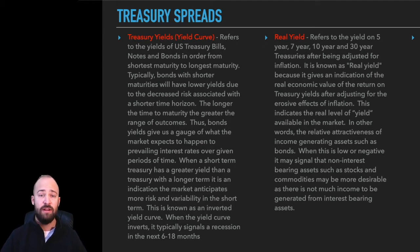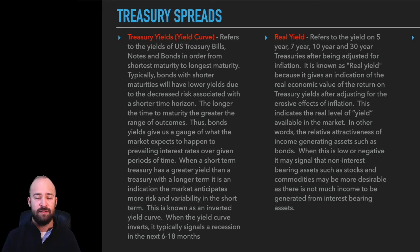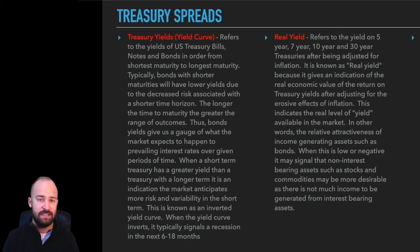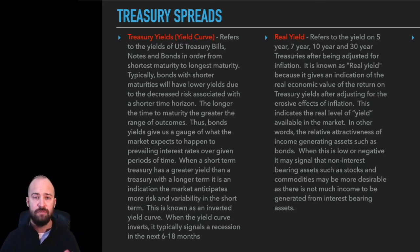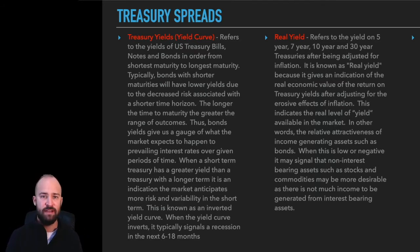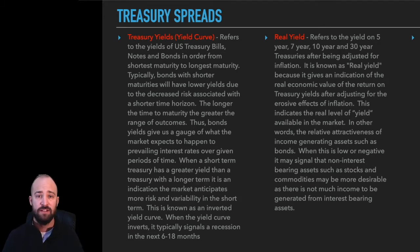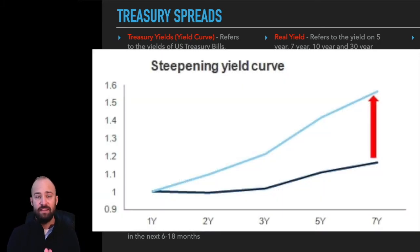Whenever investors perceive more risk, yields go up; whenever they perceive less risk, yields go down. We can get an idea of the relative levels of risk investors expect over given time frames. If the yield on three-month T-bills is going up while the yield on 30-year treasury bonds is going down, that tells us investors are perceiving more risk in the short term than in the long term. That's really at the core of the yield curve and maturity spreads — how these things are trending relative to each other.